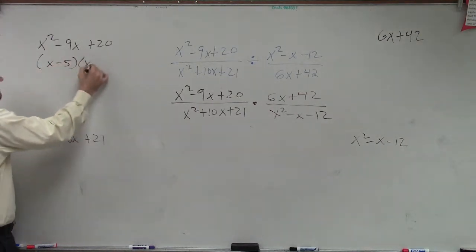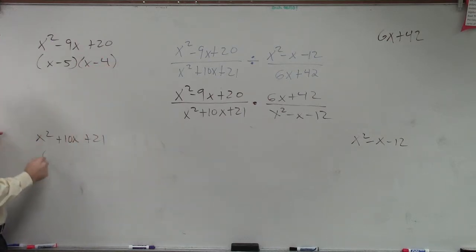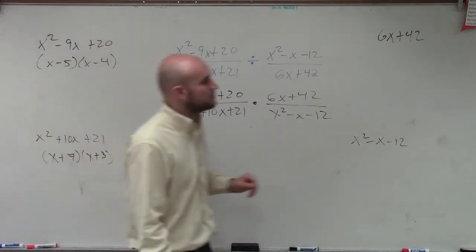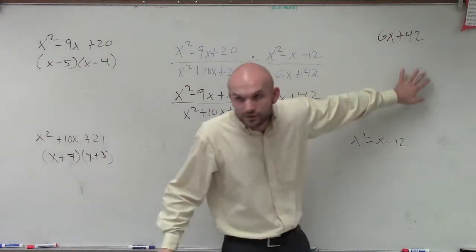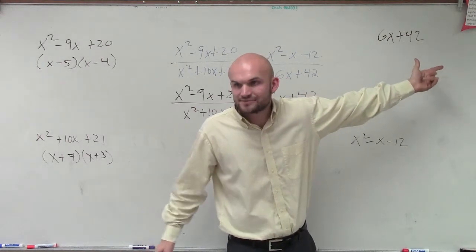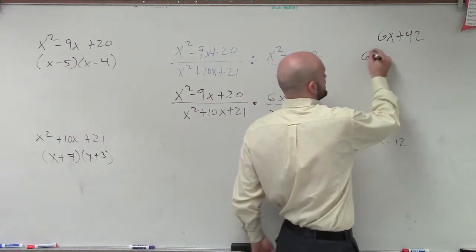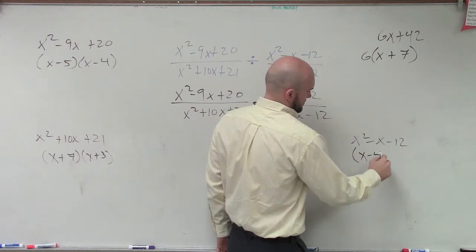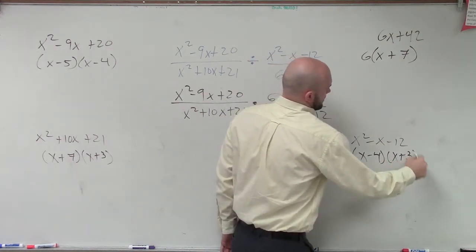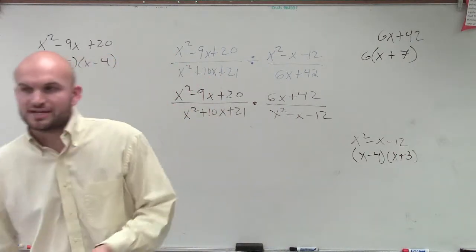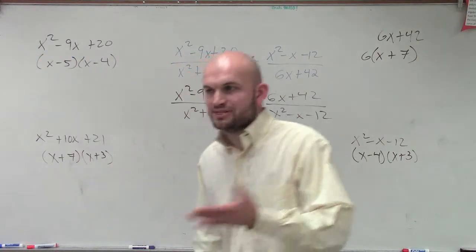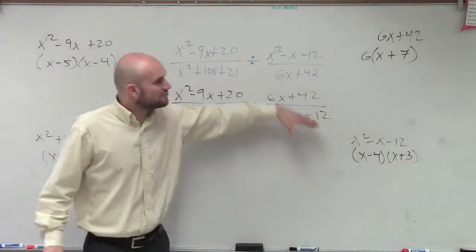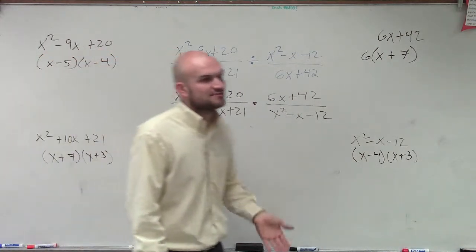x minus 5 times x minus 4. Very good. You have to know how to do the factoring very, very well — that's why I've been practicing for so long. For 6x + 42, this isn't a trinomial, but do they have something in common? Yeah, they have a 6, so we factor out the 6. Now, ladies and gentlemen, what I've done is transform every single one of these polynomials into its factored form.